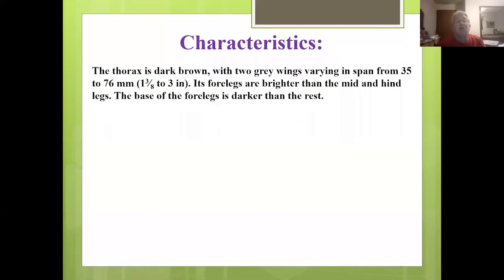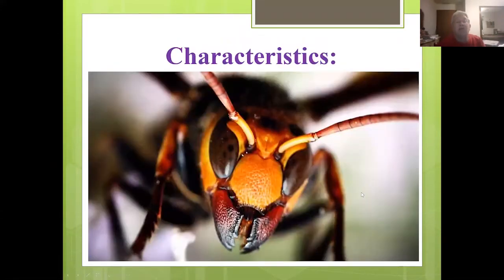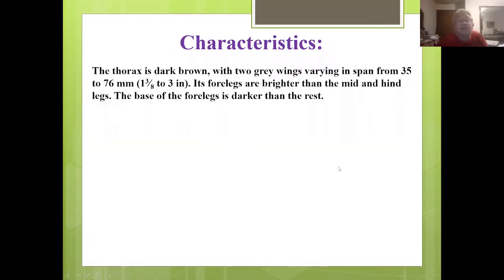You can see that black tooth right in there, and it not only digs with that — that's what it uses to damage other insects. The thorax is dark brown with two gray-to-brown wings bearing a wingspan from 35 to 75 millimeters, or one and three-eighths to three inches.